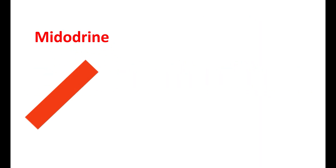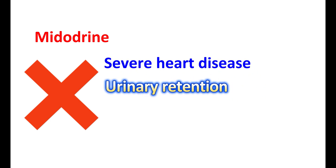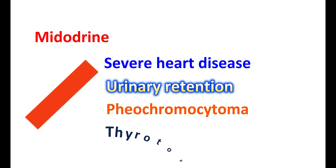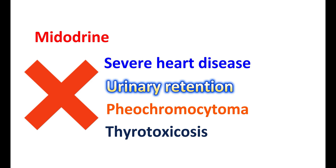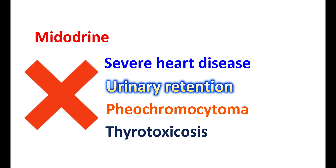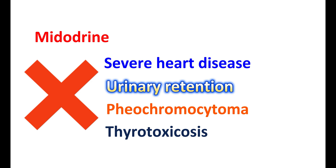Midodrine should be avoided in people with severe heart disease, urinary retention, pheochromocytoma, and thyrotoxicosis. In people with thyrotoxicosis, elevated thyroid hormones combined with Midodrine can significantly increase blood pressure. Pheochromocytoma is a rare adrenal tumor associated with increased release of adrenaline and noradrenaline, causing excessive blood pressure elevation; use of Midodrine is contraindicated due to the risk of hypertensive crisis. In people with urinary retention, use of Midodrine is also not recommended.